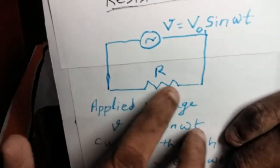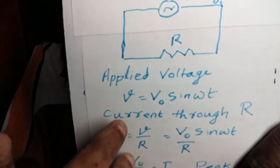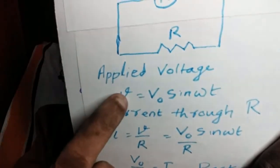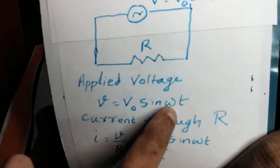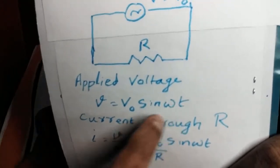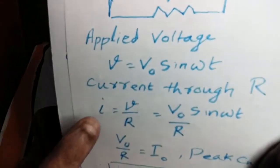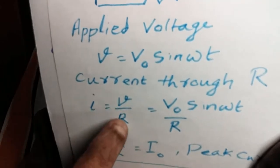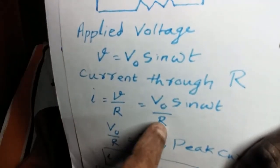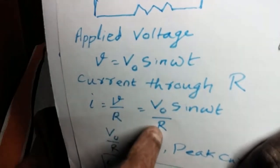Now you can apply Ohm's law here. Being an ohmic resistance, there is nothing special in this circuit. There is no self-induction, there is no charging and discharging. It simply draws current from the source and offers ohmic resistance. So you can apply Ohm's law here. The applied voltage is V₀ sine omega T, so the phase of the applied voltage is omega T. Current through the resistance R is given by I equals V by R, that is V₀ sine omega T divided by R.